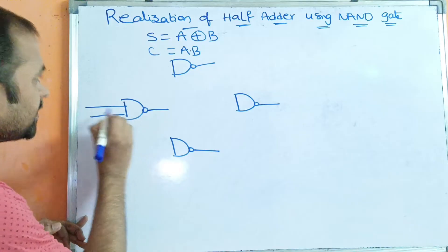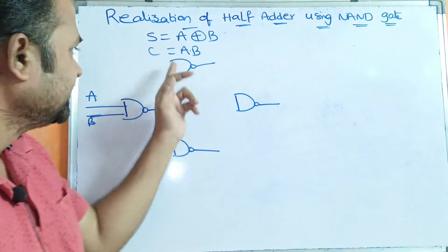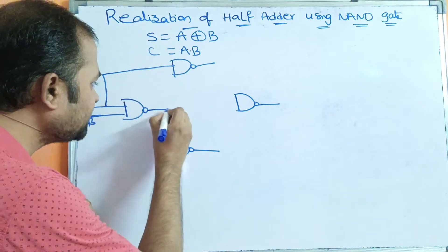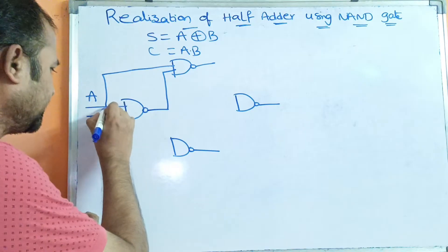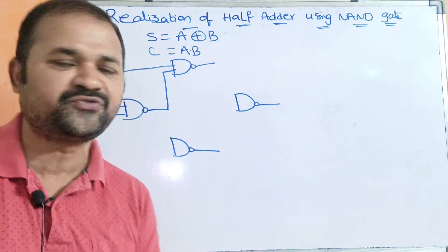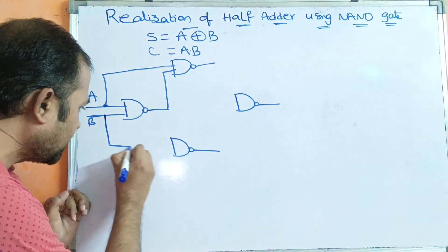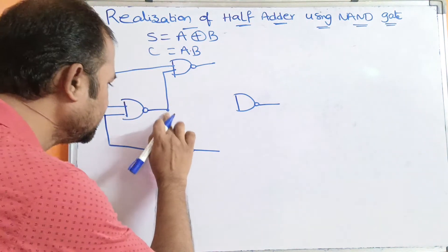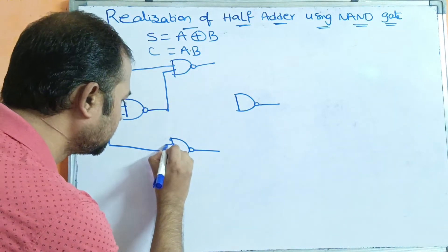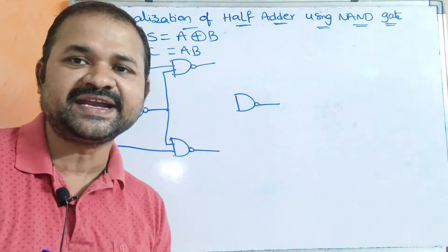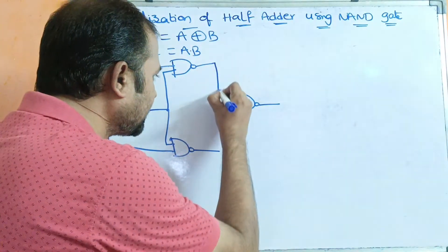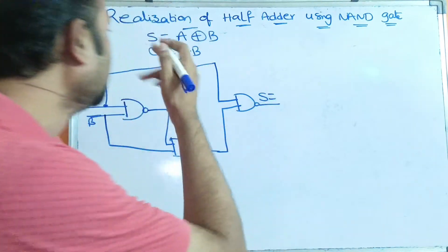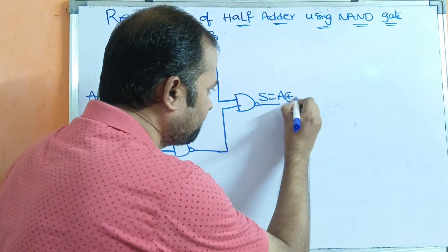For the first NAND gate, the inputs are A and B. The second NAND gate receives one input from A and the other input from the output of the first NAND gate. The third NAND gate receives one input from B and the second input from the output of the first NAND gate. The fourth NAND gate receives inputs from the output of the second NAND gate as well as the output of the third NAND gate. This gives us the expression for the sum, which is A exclusive-OR B.